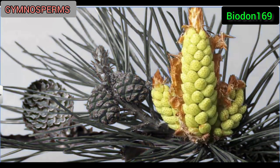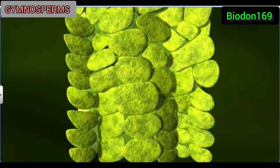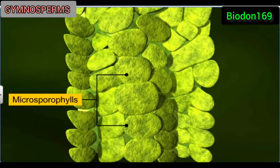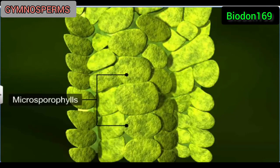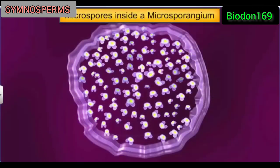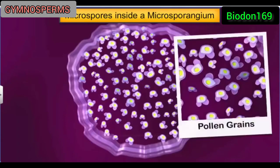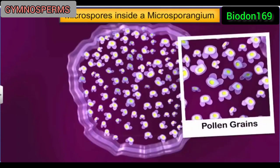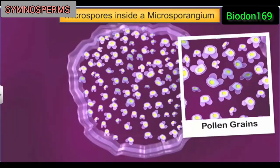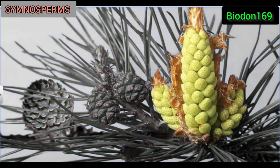The male strobulus has spirally arranged leaf-like structures called microsporophylls, which bear microsporangia — a structure that produces haploid microspores. A few microspores develop into male gametes called pollen grains, and the rest degenerate. Another name for male strobuli is microsporangia.